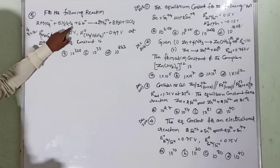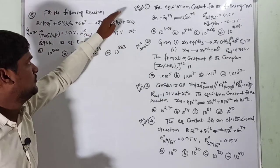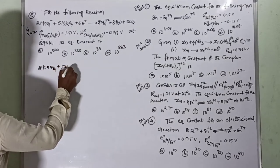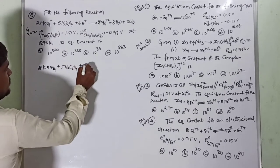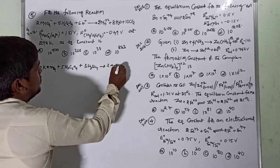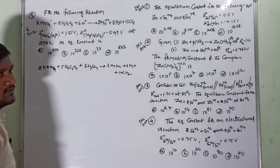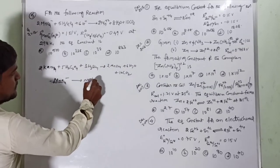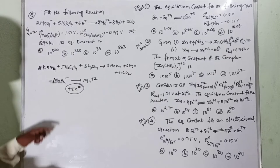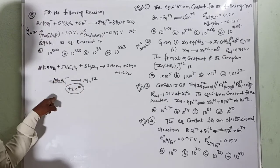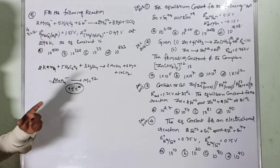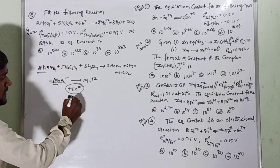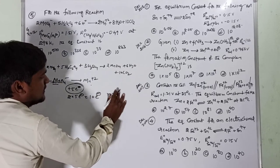GATE 2012: For the reaction 2MnO4⁻ + 5H2C2O4 + 6H⁺ → 2Mn²⁺ + 8H2O + 10CO2. Here MnO4⁻ (Mn⁷⁺) converts to Mn²⁺, gaining 5 electrons per Mn. For 2 moles of KMnO4, that is 2 × 5 = 10 electrons transferred. So n = 10.